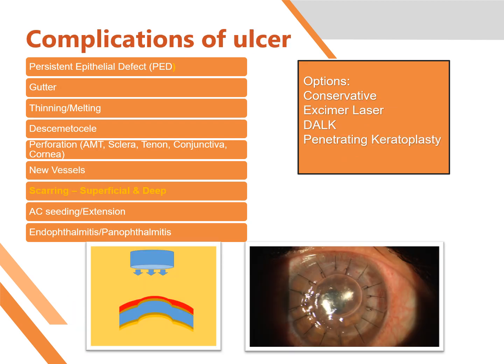If there is corneal scarring, it can be dealt with in different ways. If it's a small scar not obstructing vision too much, you can leave it. You can do excimer laser to remove a superficial scar. You can do DALK — deep anterior lamellar keratoplasty — if the scar is relatively deep. Or you can do penetrating keratoplasty, which means replacing the whole cornea, as was done in the case shown here.